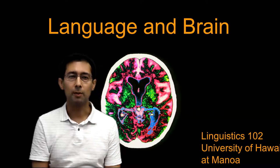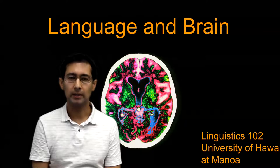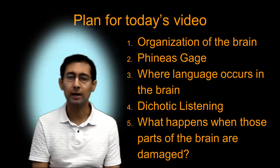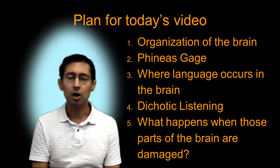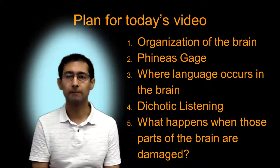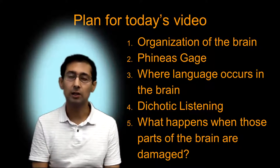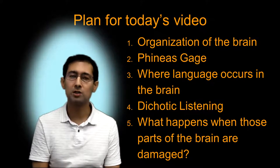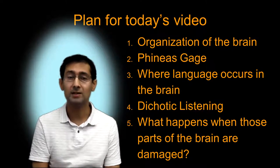Hi, I'm Kamil Deen from the Department of Linguistics at UH Mānoa. Today we're going to talk about language and the brain. Our plan for today is to talk about some general geography about the brain, how the brain is organized. We'll then talk about the curious case of Phineas Gage. I'll go through some evidence to tell you where language is placed in the brain, and then we'll talk about what happens when those parts of the brain are damaged and how that affects your ability to speak and understand language.